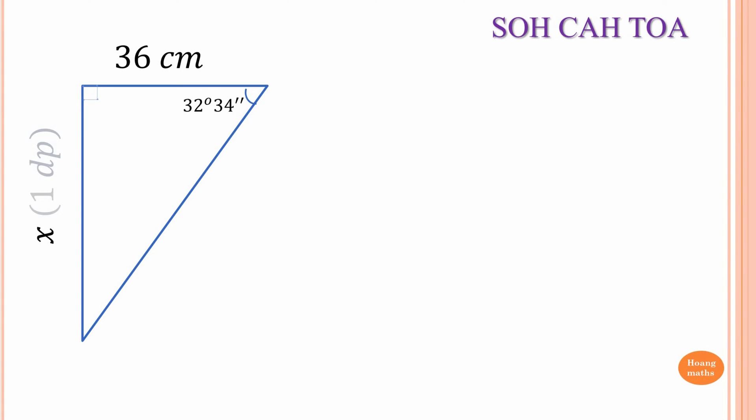Now find the side length x to one decimal place. Step one: identify which trig ratio to use. The given side — 36 — is next to the given angle, so it's adjacent, label A. The unknown side x is opposite the given angle, so it's O. We have O and A, so we use TOA — tangent.